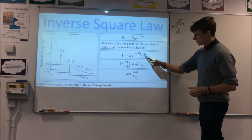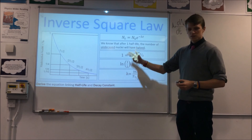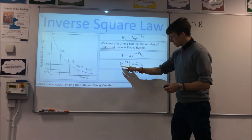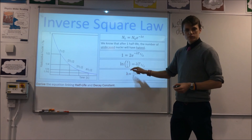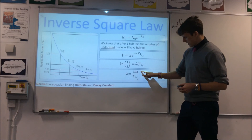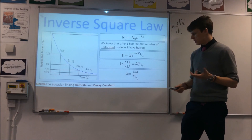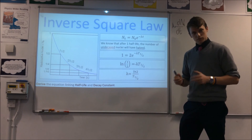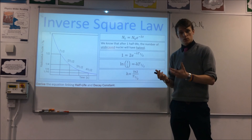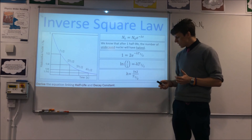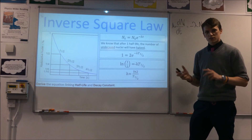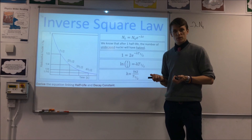We rearrange and take the natural logarithm because we have an exponential. We know that the natural logarithm of one-half equals negative the natural logarithm of two, since we can write one-half as two to the power of minus one. This gives us: λ = ln2 / T½. So we can calculate the decay constant by experimentally measuring the half-life of a sample — which is fairly easy to do with a detector and a timer — and thereby work out the probability of a nucleus decaying per second.